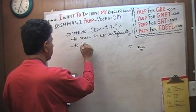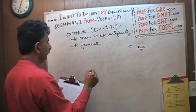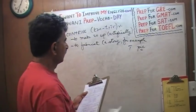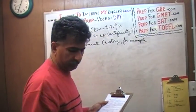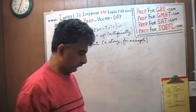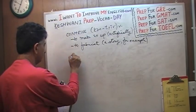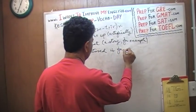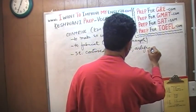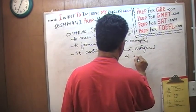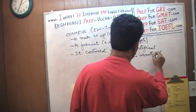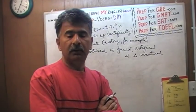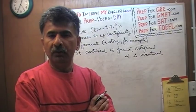In other words, to fabricate — for example, a story. If you fabricate a story, you're contriving it. Something that is contrived is usually forced, artificial, and therefore unnatural. So if someone says that your story sounds contrived, what they're trying to tell you is that it doesn't sound real — it sounds made up, it sounds forced, it's not natural.